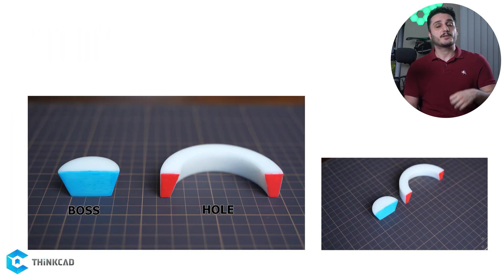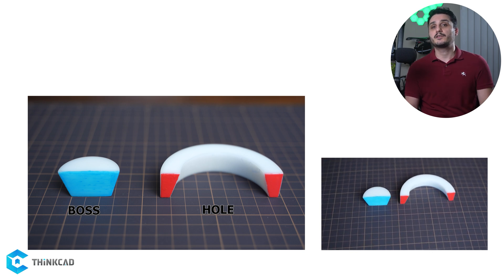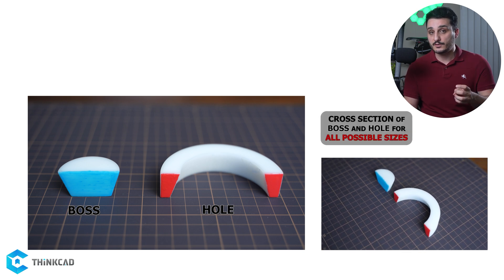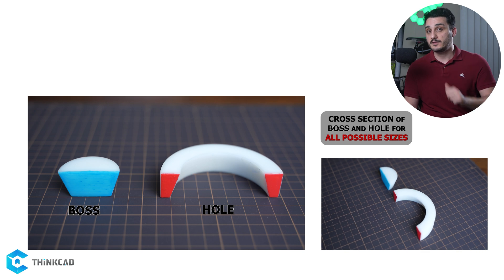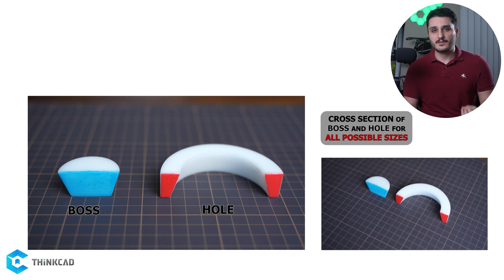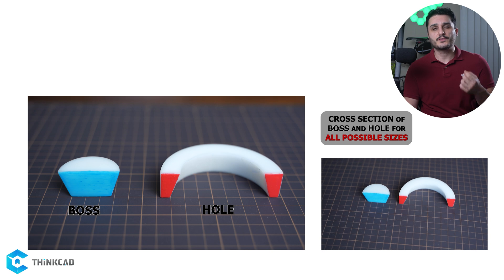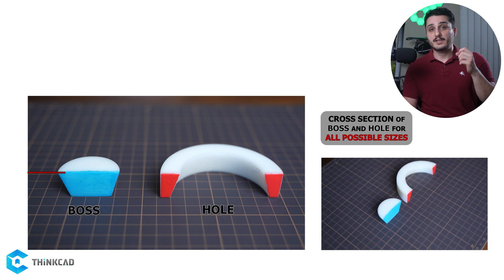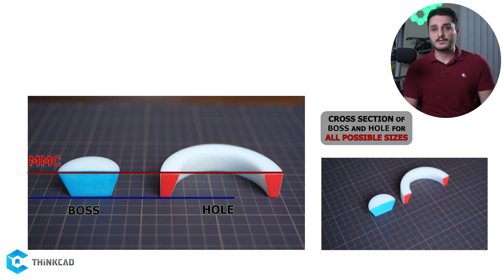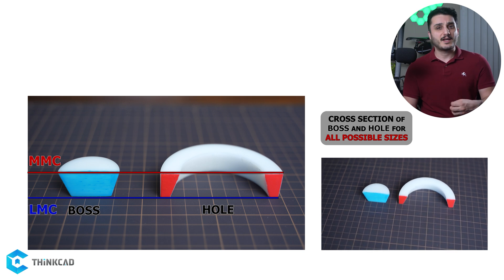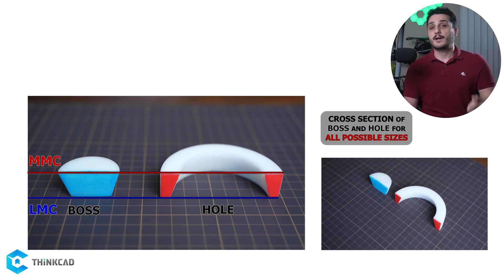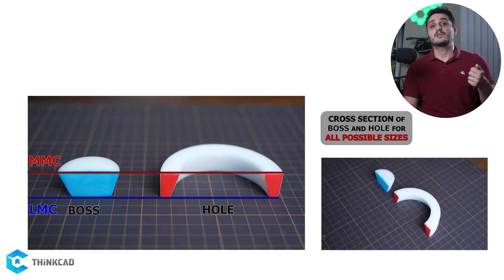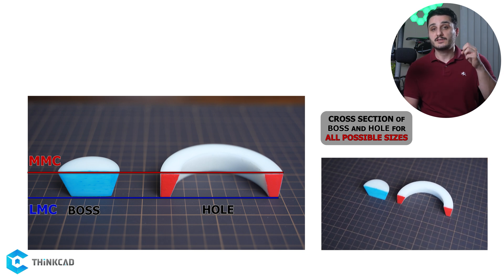Let's look at our cross-section example from the MMC-LMC definitions video. This was a cross-section of a boss and hole cylindrical feature at all their size possibilities — very exaggerated because tolerances are usually very small. I have placed my parts upside down, which makes MMC go on top and LMC on the bottom. It doesn't matter which side is up or down because the definitions are absolute: MMC is always the largest size for boss features and smallest size for hole features, and LMC is the exact opposite.